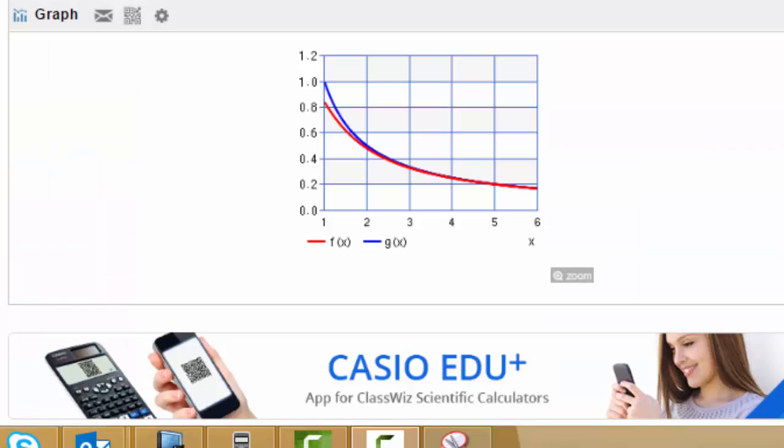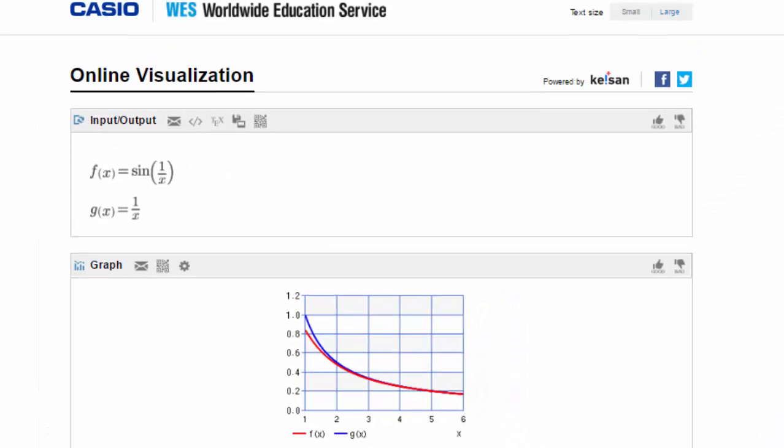You can download the Casio EDU app to view the graph from your scientific calculator. You have a graph of f(x), which is sin(1/x), and g(x), 1/x.